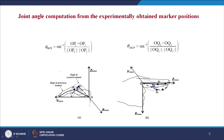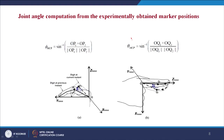Coming to the joint angle computation from the experimentally obtained marker points — how we compute the joint angles from the marker positions placed on the finger joints. There are two joints to be computed: one is the abduction-adduction angle theta MCP and the other is phi MCP which is the flexion-extension angle. The flexion-extension angle is computed based on the signed angle between the vector op1 and op2, where op1 is the vector connecting the MCP joint to the PIP joint representing the proximal phalanx. The angle between these two vectors as the phalanx moves from initial to intermediate configuration gives the flexion-extension angle.